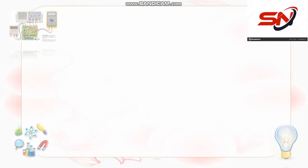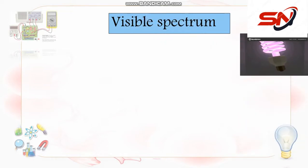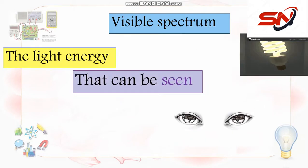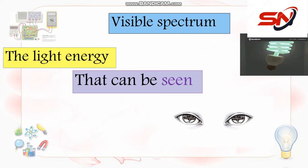هل فيه energy أنا مش بشوفها أو energy أنا بشوفها؟ Visible spectrum — هو النور اللي أنا بشوفه. Visible spectrum: it is the light energy that can be seen. يعني النور اللي أنا بشوفه بعينيك، اللي طالع من اللمبة أو طالع من الشمس، ده اسمه visible spectrum.